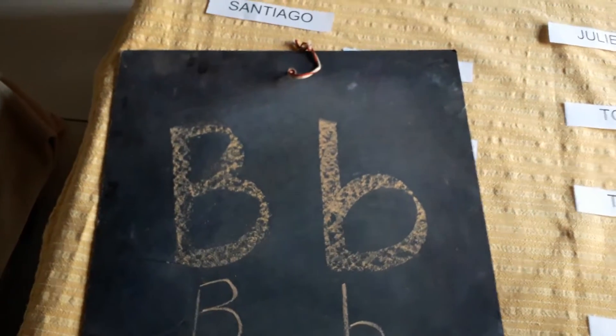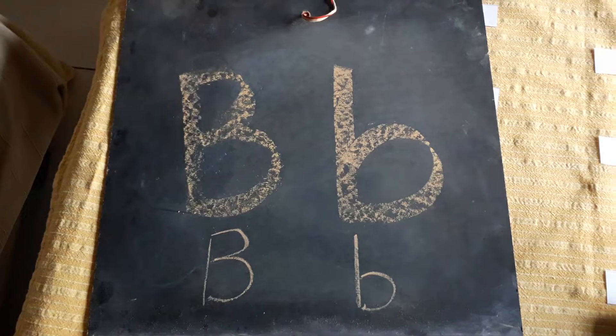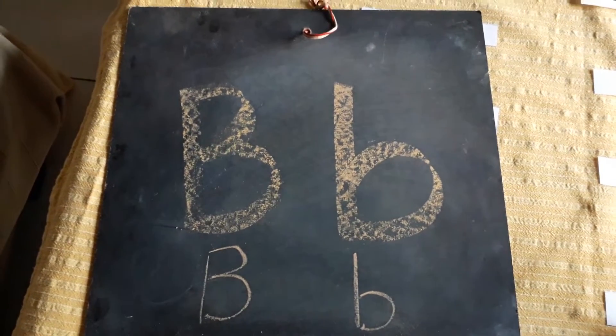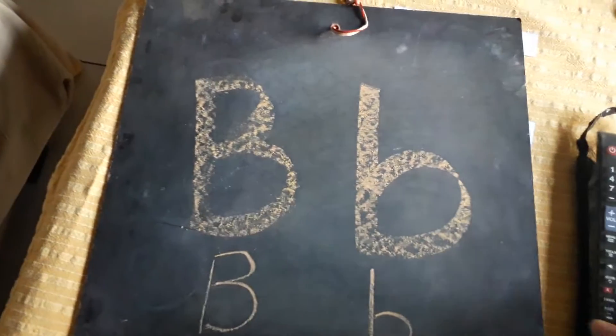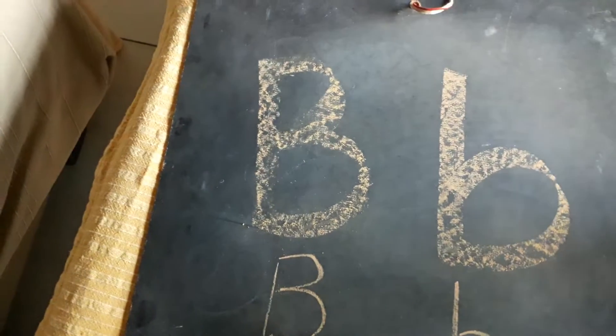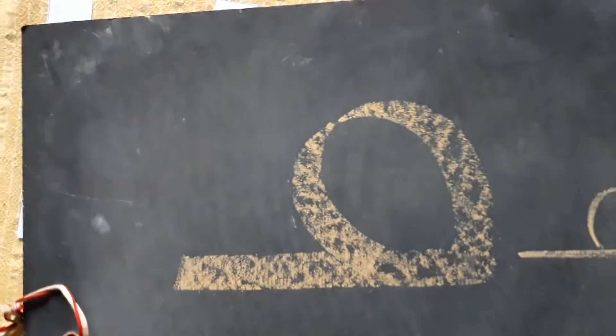Wow, what's this? Look at this. Letter B, capital. Letter B, small letter. Capital letter B, small letter B — la mayúscula y la minúscula. And let's learn, trabajamos con la minúscula, small letter B, like this.